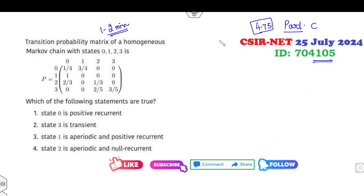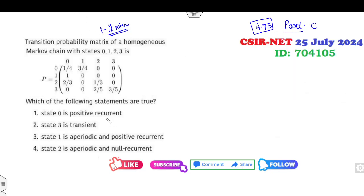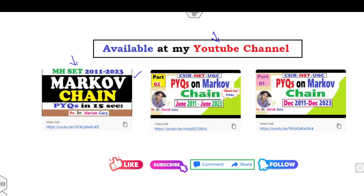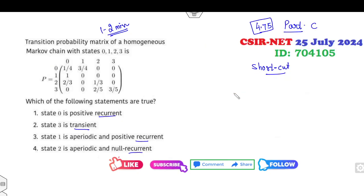Let me solve this quickly for you. First, I will explain this question with a detailed analysis — meaning I will tell you three to four different methods to solve it. Remember, the question is asking about recurrent and transient states. If you recall my shortcut tricks for checking transient states from those lectures, this becomes very straightforward.